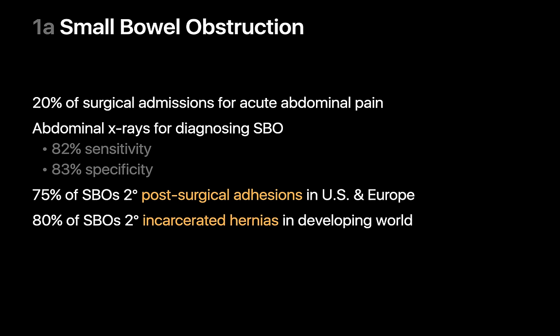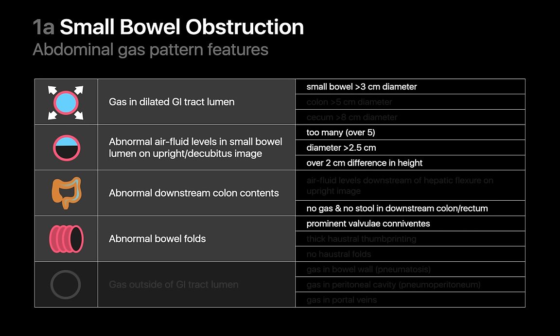Adhesions from prior abdominal surgery are the most common cause of small bowel obstructions in places like North America and Europe, while in low-income countries the most common cause is incarcerated hernias. Abnormal abdominal gas patterns that may occur in a small bowel obstruction include distended small bowel loops over 3 centimeters in diameter. The colon and any small bowel downstream of the obstruction site will usually be collapsed, resulting in a paucity of distal gas. Air-fluid levels may occur in small bowel upstream from the obstruction, and abnormally thickened valvulae conniventes may be present, resulting in a stack-of-coins appearance.